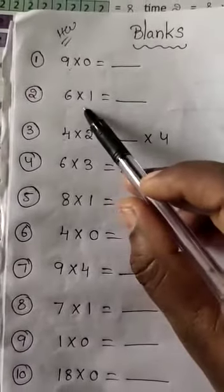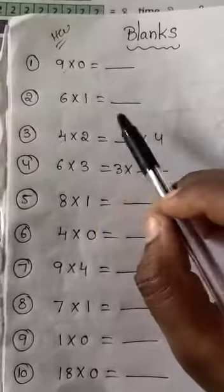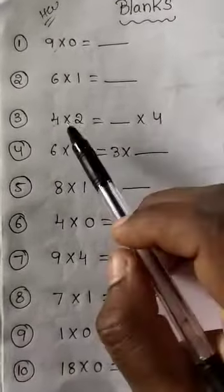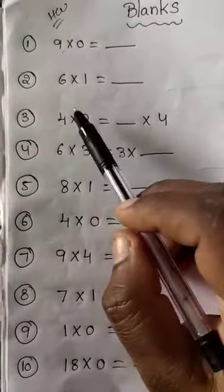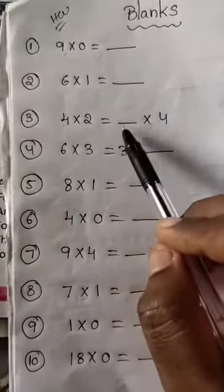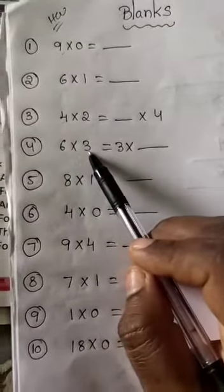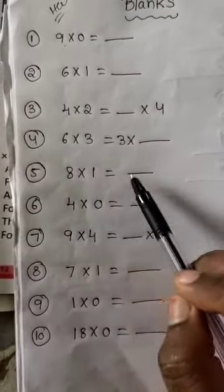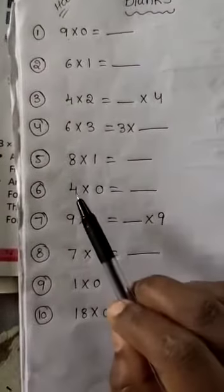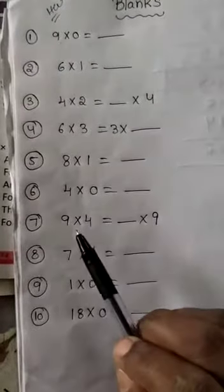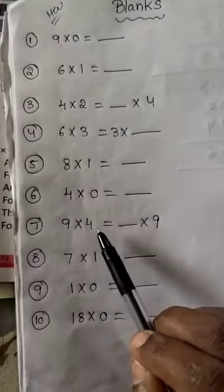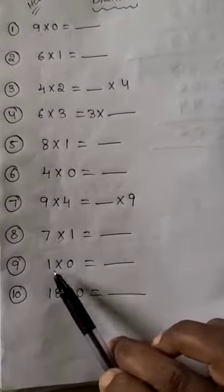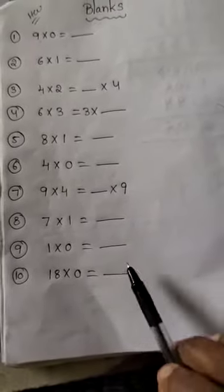Next: 6 into 1 is equal to dash. Third: 4 into 2 is equal to dash into 4. Then, 6 into 3 is equal to 3 into dash. 8 into 1 is equal to dash. 4 into 0 is equal to dash. 9 into 4 is equal to dash into 9. 7 into 1 is equal to dash. 1 into 0 is equal to dash. 18 into 0 is equal to dash.